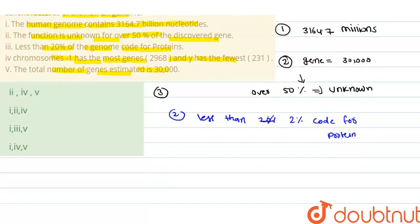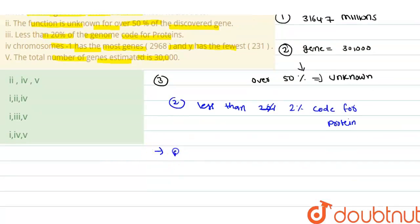It means that less than 2 percent of genes will code for protein. And if we talk about maximum genes, maximum genes are found in chromosome number 1, and minimum genes are found in chromosome Y.